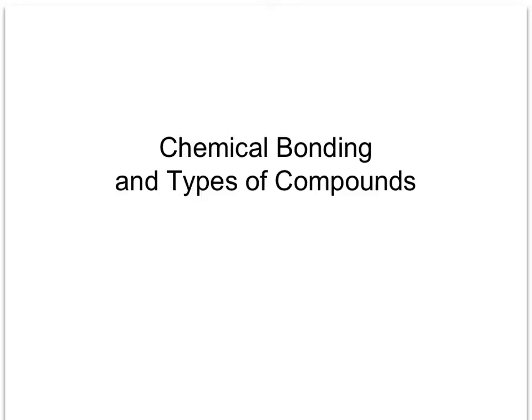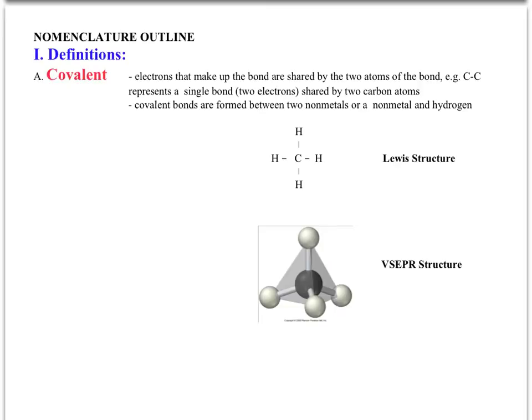Good morning. I'll start the topic today on inorganic nomenclature by talking about the different types of chemical bonds — covalent bonds and ionic bonds. This slide shows the covalent bonding scenario. These single lines represent two electrons, and those two electrons are shared between the two atoms in the bond — for example, between carbon and hydrogen in methane.